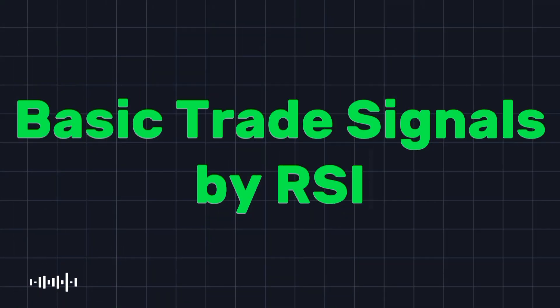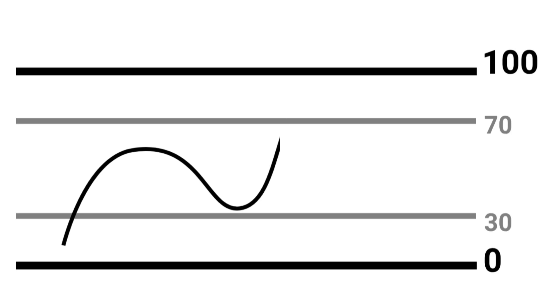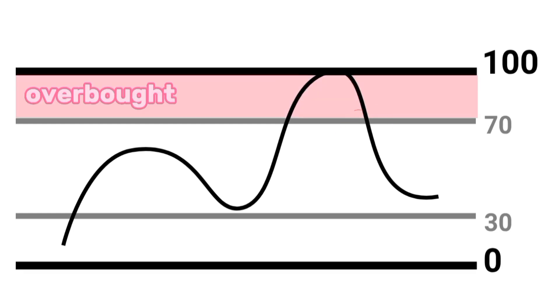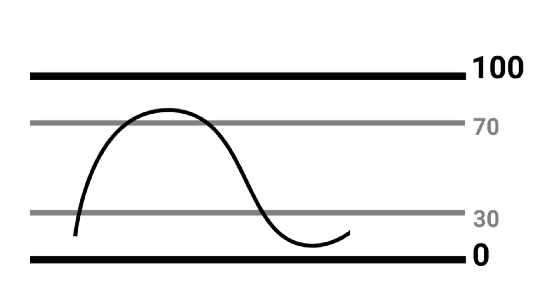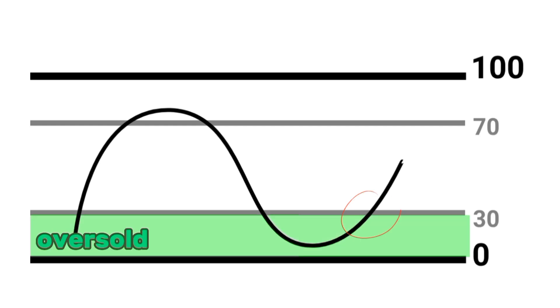The basic method of using RSI for trading signals is straightforward. A sell signal is generated when the RSI crosses below the 70 level, indicating the market may be exiting an overbought zone and prices could drop. Conversely, a buy signal occurs when the RSI crosses above the 30 level, suggesting the market may be leaving an oversold zone and prices might rise.